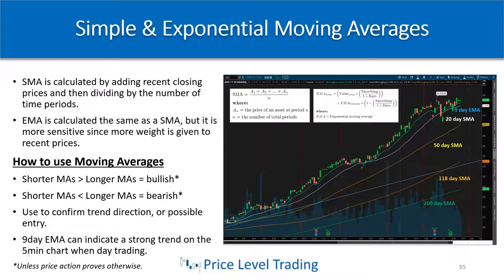The main way I recommend using moving averages — and this is only on the weekly, daily, and monthly time frames — is: when the shorter moving averages are greater than the longer moving averages, the trend is bullish; and when the shorter moving averages are less than the longer moving averages, the trend is bearish — unless price action proves otherwise. We can use these moving averages to confirm trend direction or possible entry.